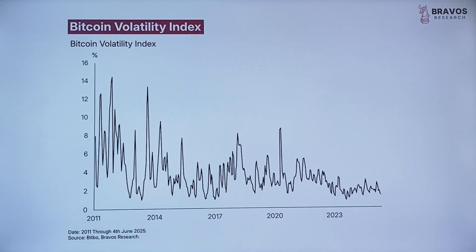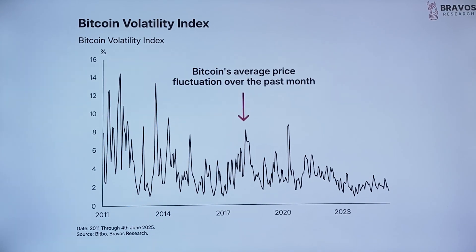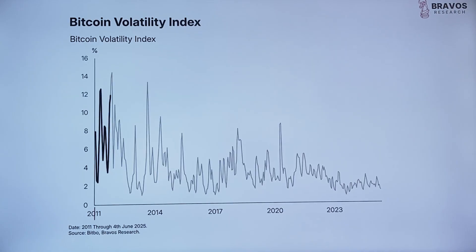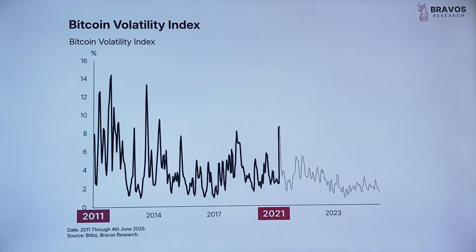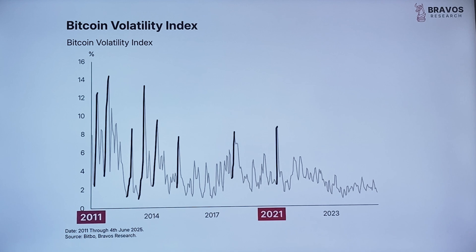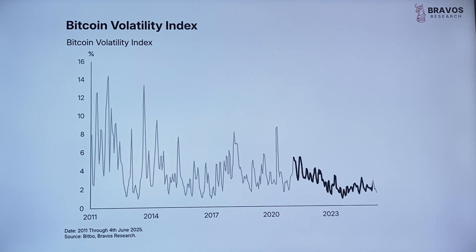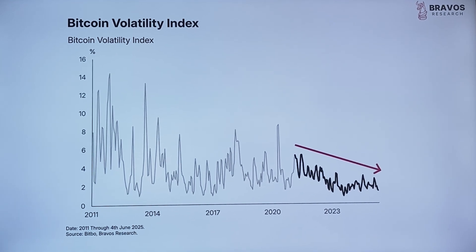I double-checked my math multiple times because I thought I'd made a mistake. But according to Glassnode data, this pattern is clear: Bitcoin's volatility is decreasing as adoption grows. This is the opposite of bubble behavior. Bubbles get more unstable as they grow. Bitcoin is becoming more stable.